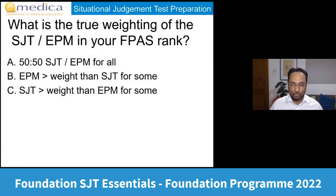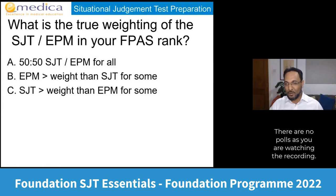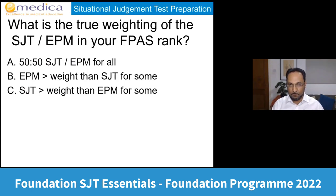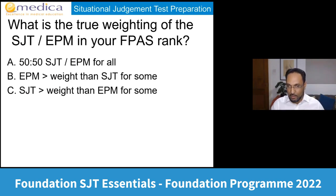Let's start with the SJT essentials. I'll launch a couple of polls to see what you already know. First question: what is the true weighting of the SJT and the Educational Performance Measure in your overall FPAS ranking? Option A is 50-50, SJT and EPM equally weighted. Option B is the EPM carries more weight than the SJT for some students. Option C is the SJT carries more weight than the EPM for some students.